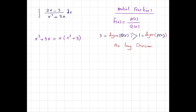As you can see, you have a linear expression and you have a quadratic expression. But this quadratic expression has a discriminant which is negative. b squared minus 4ac is 0 minus 12, which is negative. So the discriminant is negative — you don't have any real root.